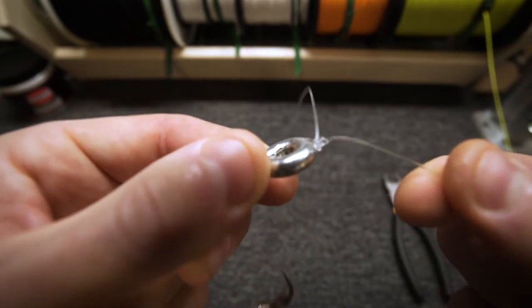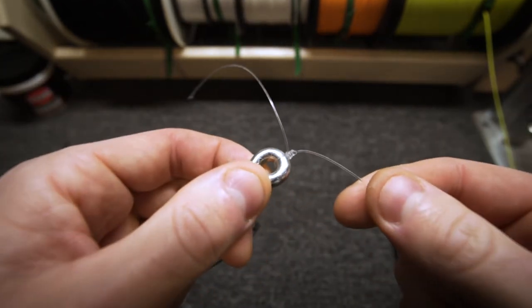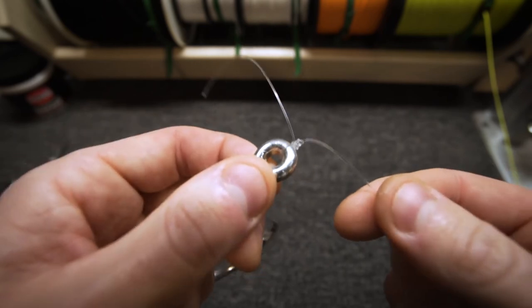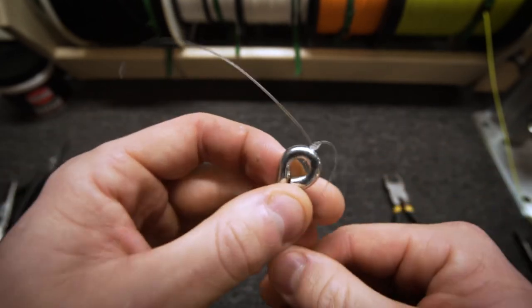One other little trick that I like to do when I'm tying with mono: you do not have to do this on every knot or you'll drive yourself nuts, but if I'm at home and I'm tying a bunch of pre-tied leaders, you can cut your tag.